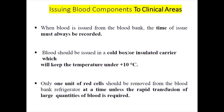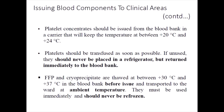Blood should be issued in a cold box or insulated carrier that keeps the temperature under 10 degrees. Only one unit of red cells should be removed from the blood bank refrigerator at a time, unless there is rapid transfusion of large quantities. Platelet concentrates must be issued in a carrier keeping them between 20 to 24 degrees, transfused as soon as possible, and if unused, never placed in a refrigerator — they must be returned immediately to the blood bank.